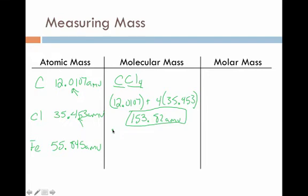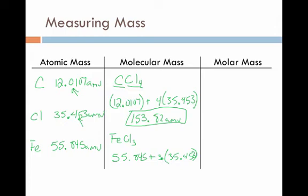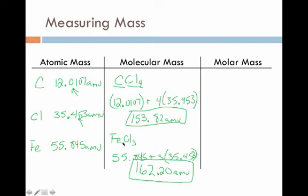Likewise, we can repeat this process with FeCl3, iron three chloride. We take the mass of one iron atom, 55.845, and add it to the mass of three chlorine atoms, 35.453 times three. In this case, we get an answer of 162.20 atomic mass units. So just like we can look up atomic masses from the periodic table, we can do simple mathematics to calculate molecular masses.